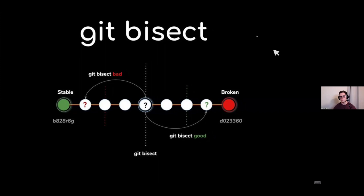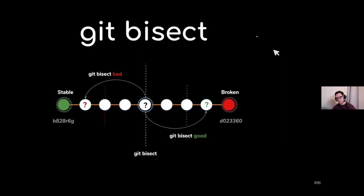To summarize git bisect visually: we know where our stable branch is and where the broken part is. We don't know where the breaking change is. Bisect takes us to the middle — if it's a bad commit it takes us closer to stable, if it's a good commit we move closer to broken — and we keep going until we find the broken commit.